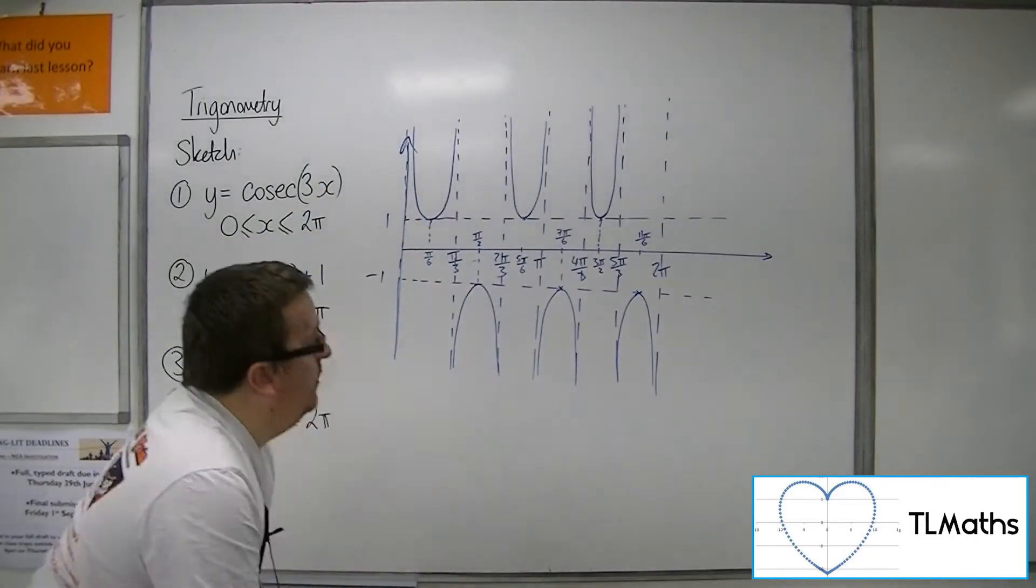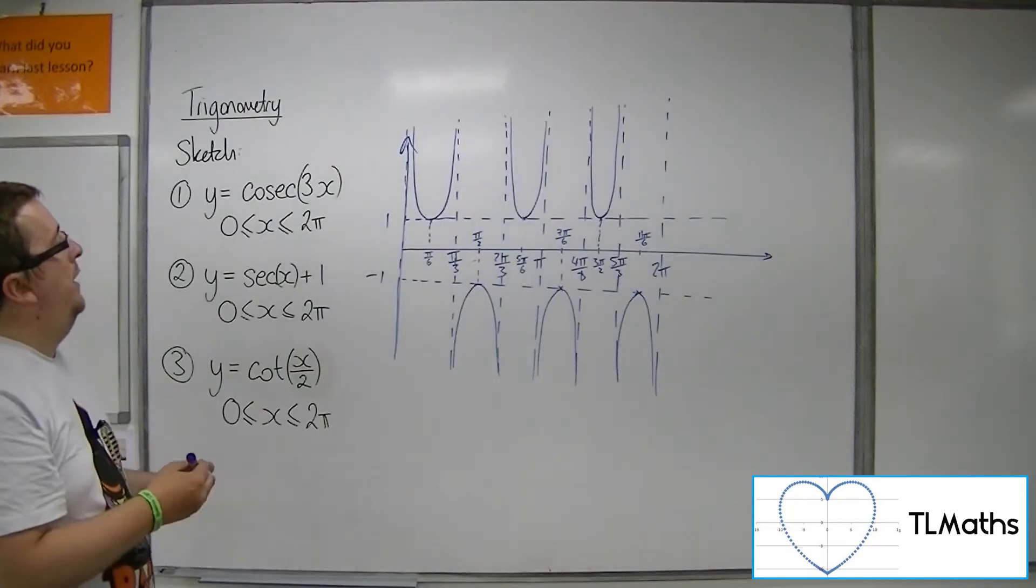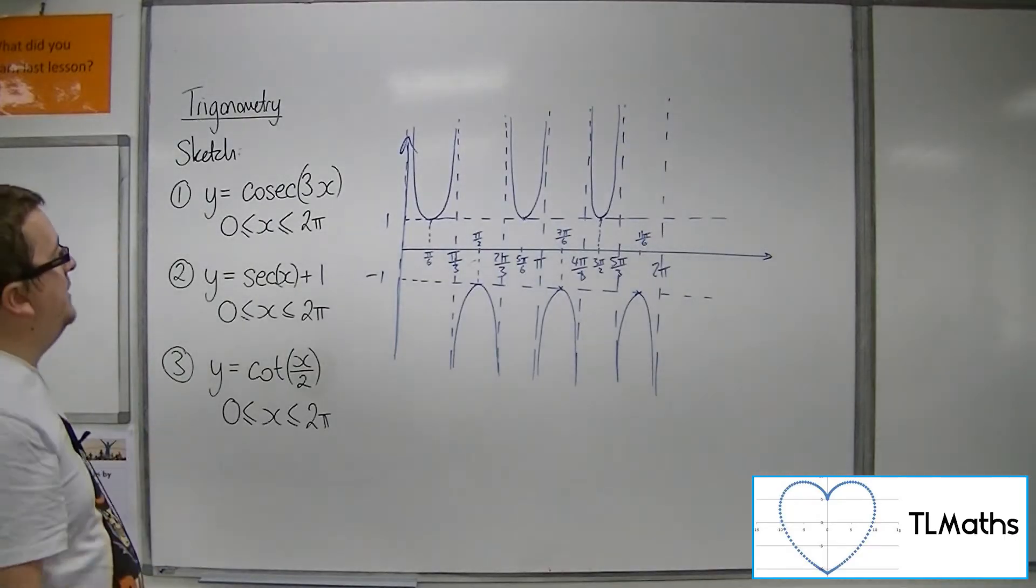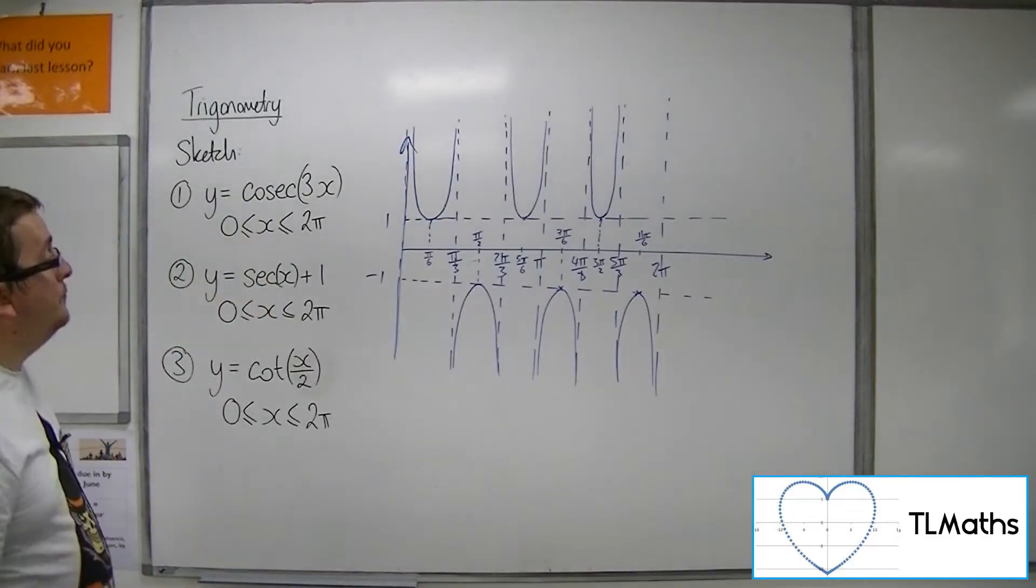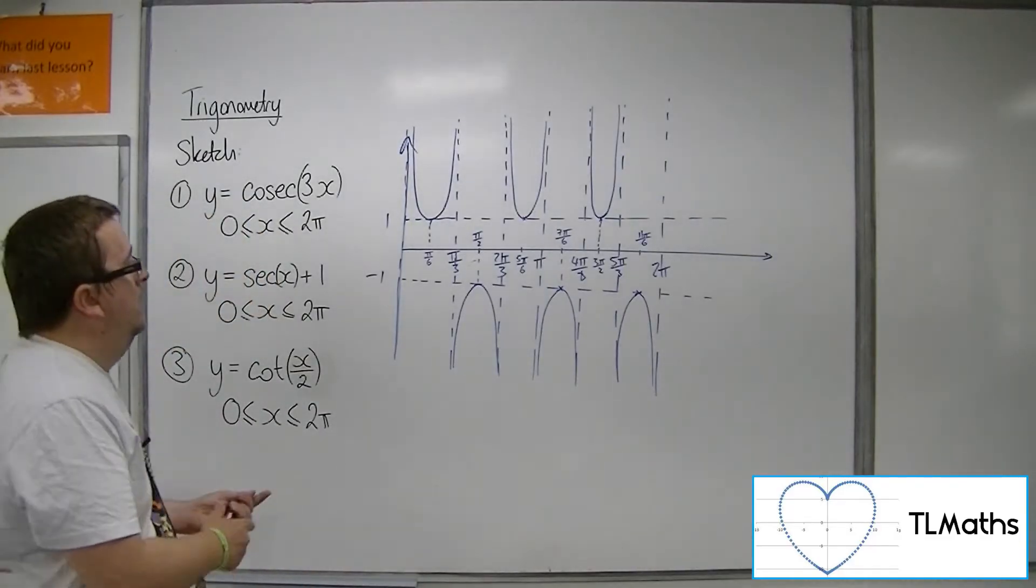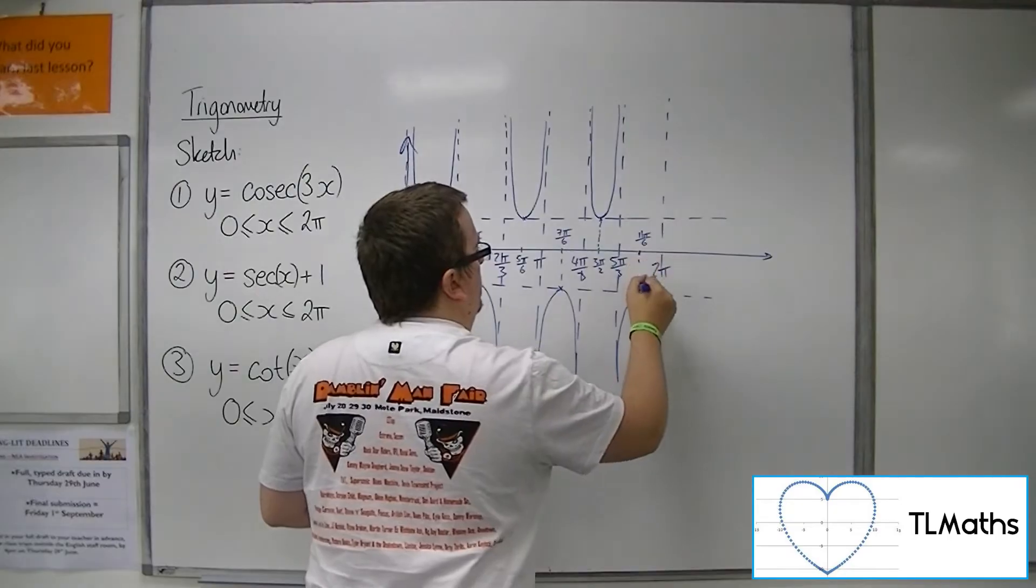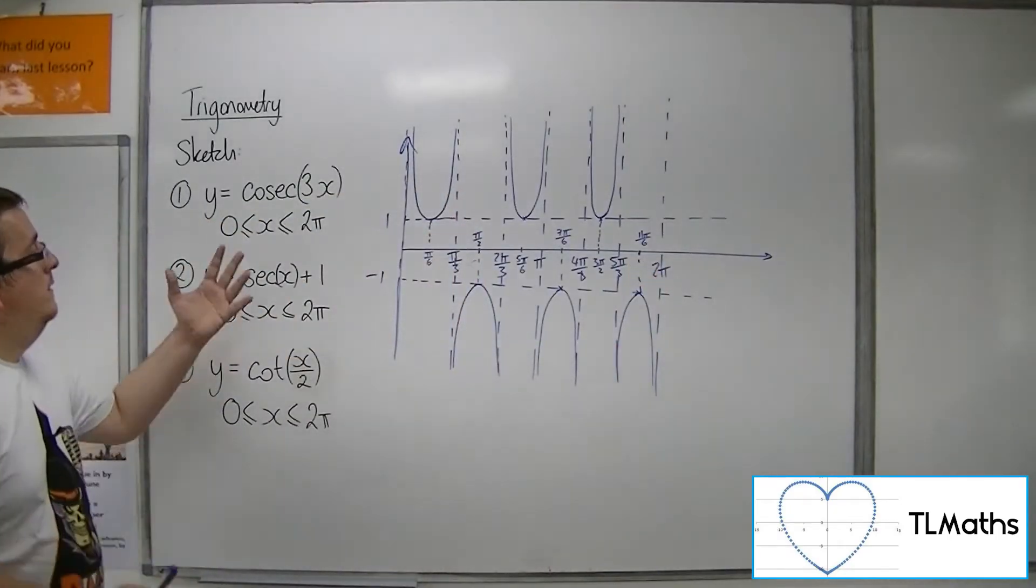So that is what cosec of 3x looks like between 0 and 2 pi. Put that on as well. So that would be number 1.